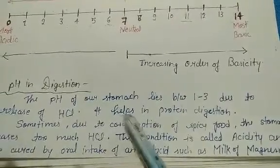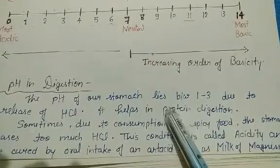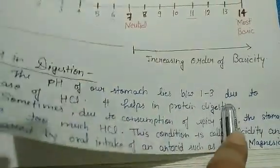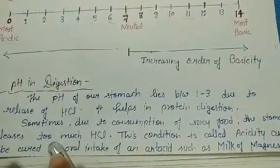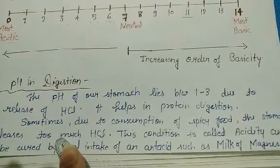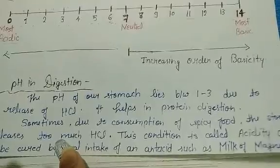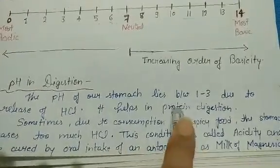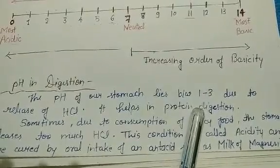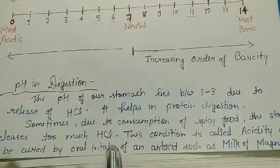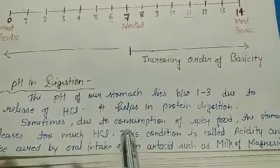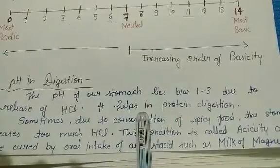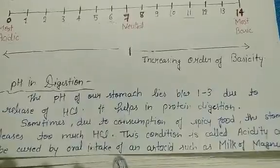Hydrochloric acid released in the stomach helps in protein digestion, keeping stomach pH between 1 and 3. Sometimes, when we eat too much oily or spicy food, or when we don't get timely meals, the stomach starts to produce more hydrochloric acid than normal. This condition is called acidity, and it causes a burning sensation in the stomach or chest and difficulty in digestion.